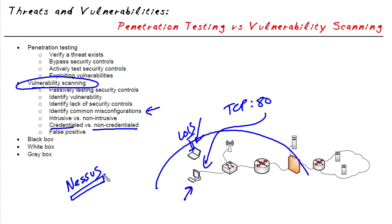If we did a vulnerability scan without credentials to log in, that would be referred to as a non-credentialed vulnerability scan. The goal is to discover and be detective in nature regarding what vulnerabilities exist on our systems, so that we can take corrective action to mitigate against threats that might take advantage of those vulnerabilities. One of the key elements of vulnerability scanning is that it is passive — it is not going to inject malicious software or bring a server down when it finds a vulnerability. It's simply a passive, non-aggressive manner of discovering vulnerabilities on a system.